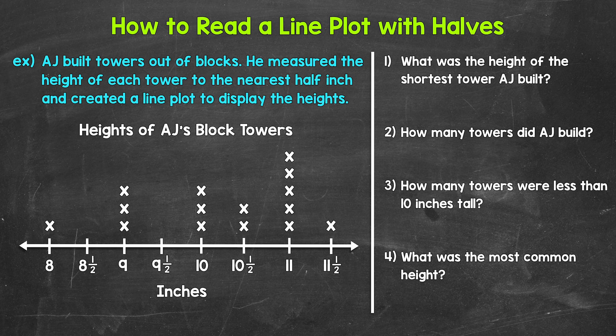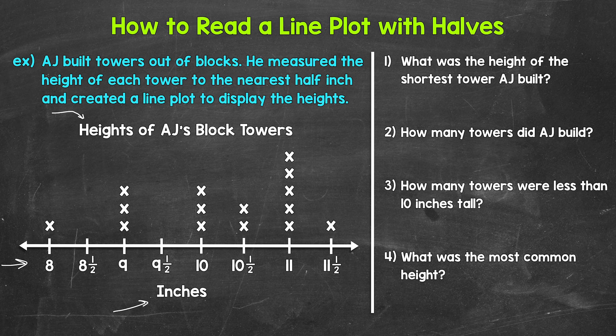For our example, it says AJ built towers out of blocks. He measured the height of each tower to the nearest half inch and created a line plot to display the heights. Looking at the line plot, we have a title up top that tells us what it's showing us — heights of AJ's block towers. Then we have our number line, which starts at eight and counts up by one half to 11 and a half. Underneath the number line, we have inches — that's our unit of measure, telling us what the numbers on the number line represent.